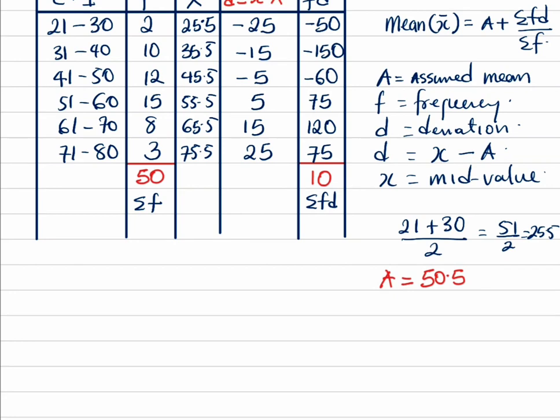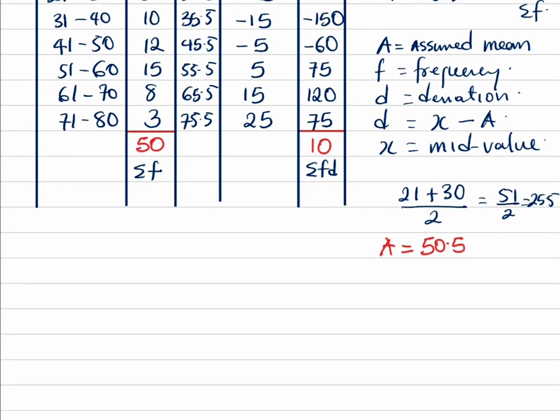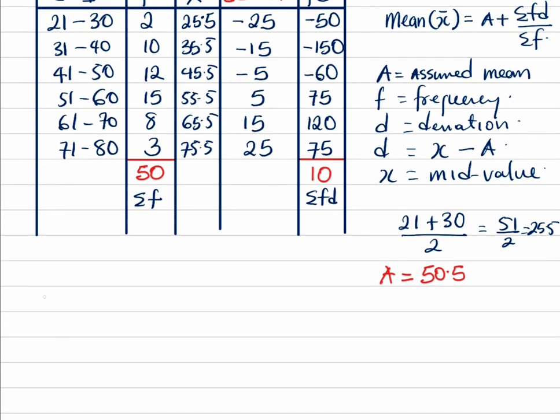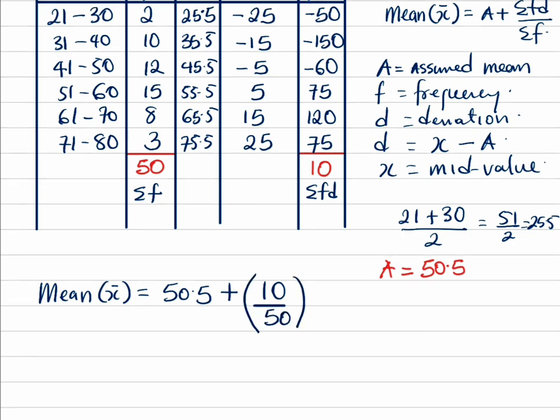So move to get our final answer to round up the question. So we have our mean x bar equals A which is 50.5, then plus we have summation fd which is 10 all over summation f which is 50. This is what we have.